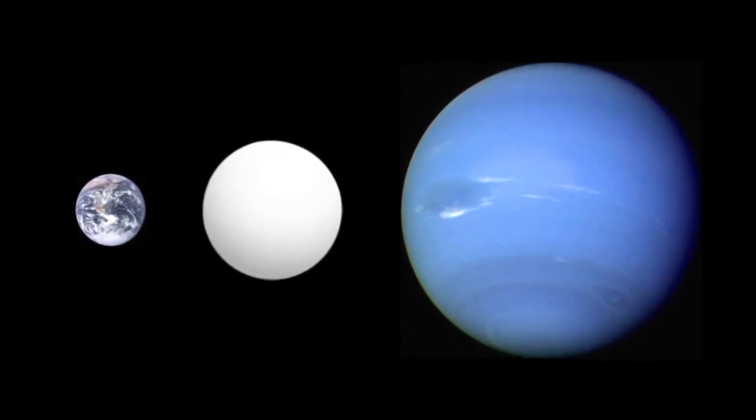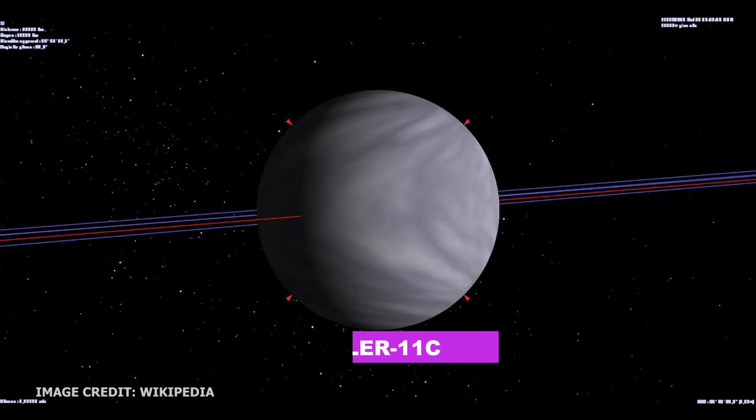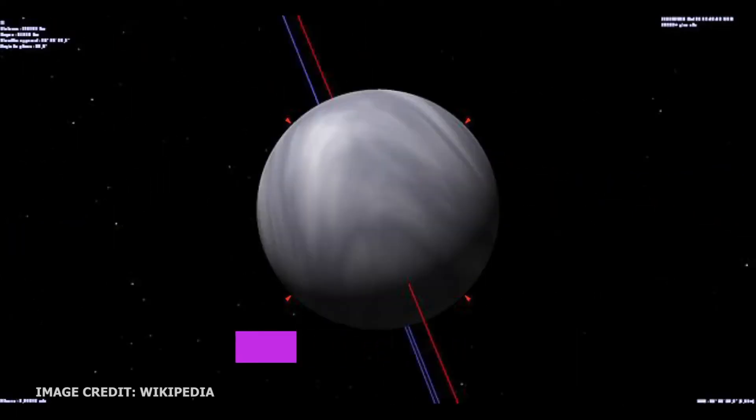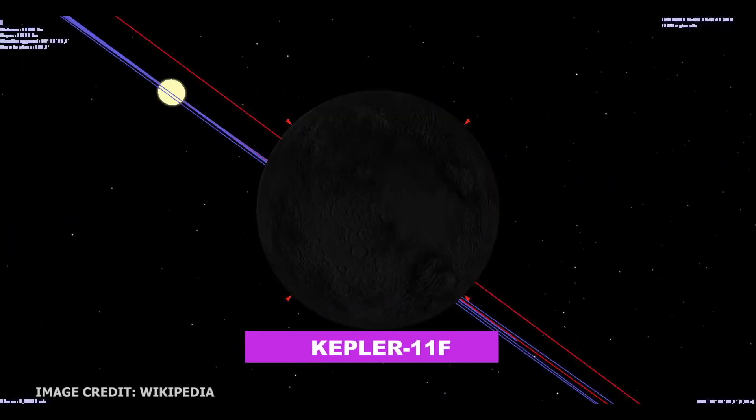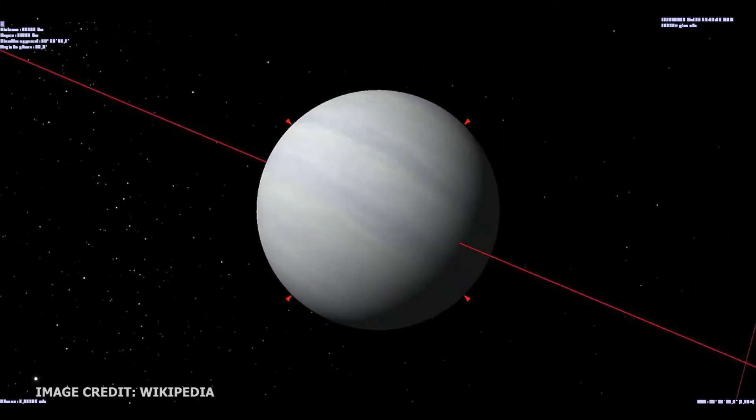Moving outward, the other planets are Kepler-11c, Kepler-11d, Kepler-11e, Kepler-11f and the outermost planet Kepler-11g, which is half as far from its star as the Earth is from the Sun.